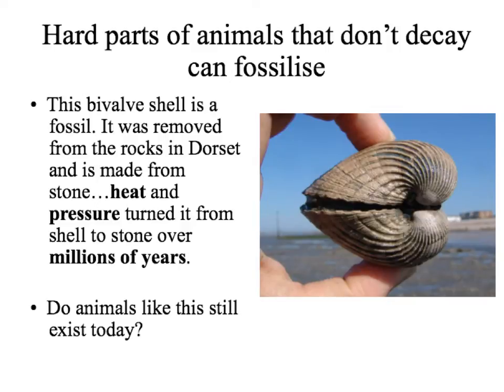This is an example of a bivalve, which is a little animal that lives inside a shell, and it's a fossil found in the rocks in Dorset. Over millions of years it's been turned by heat and pressure from shell to stone, once the animal inside it died millions of years ago. I'm sure you recognise this type of bivalve shell — we've seen empty shells left by living organisms that have been around during our lifetime, so we know these types of organisms still exist today.